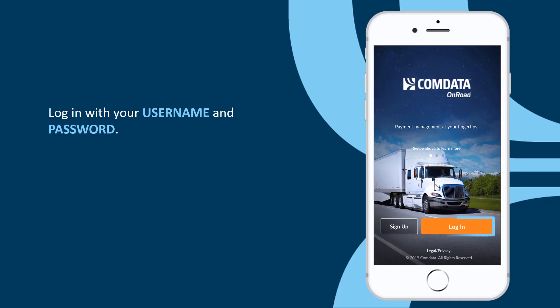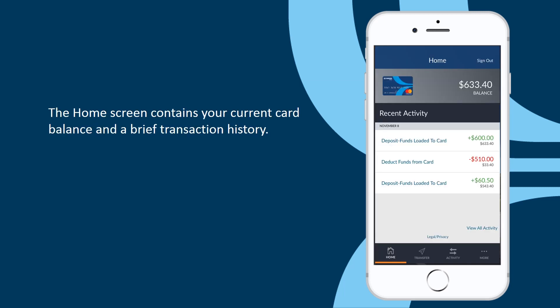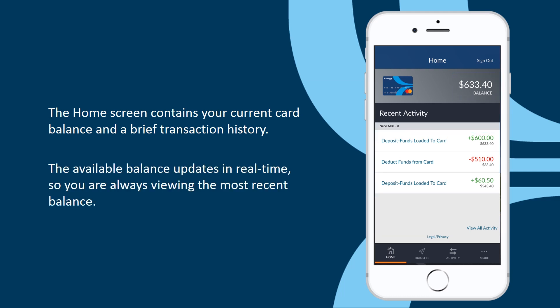Log into the mobile app with your username and password. Once logged in, the home screen contains your current OnRoad card balance and a brief transaction history. The card balance updates in real-time so you can be sure you are viewing the most recent balance.